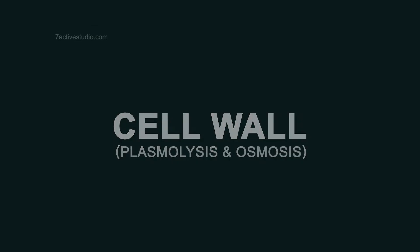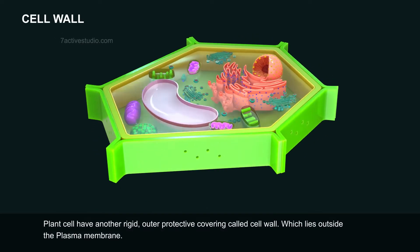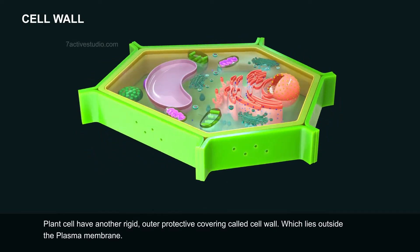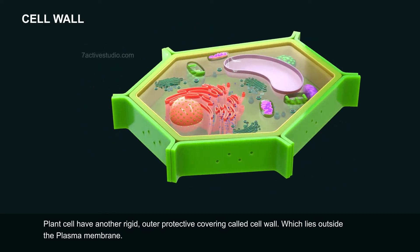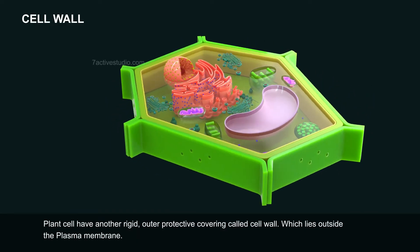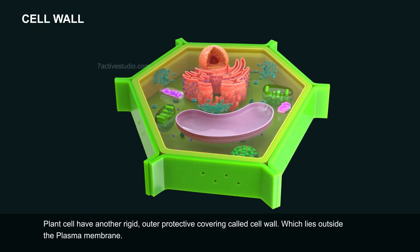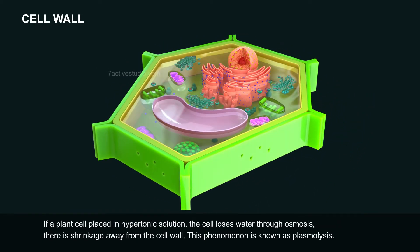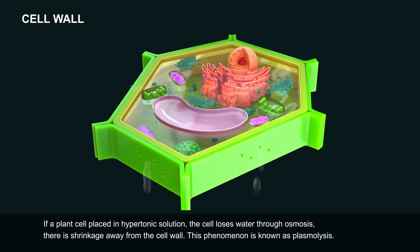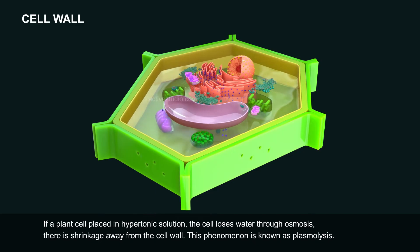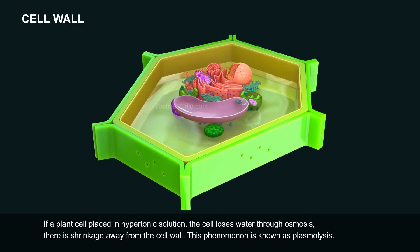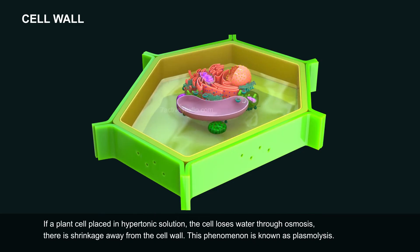Cell wall. Plant cells have another rigid, auto-protective covering called cell wall, which lies outside the plasma membrane. If a plant cell is placed in a hypertonic solution, the cell loses water through osmosis, and there is shrinkage away from the cell wall. This phenomenon is known as plasmolysis.